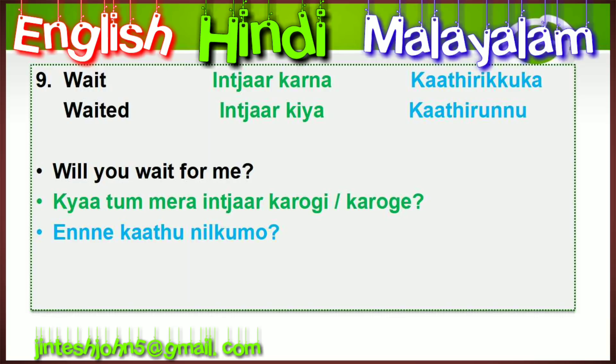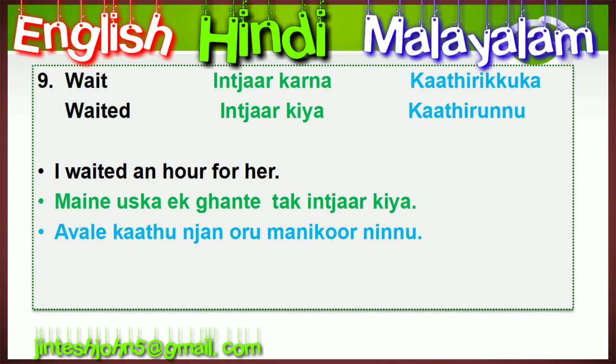The next verb is 'wait.' In Hindi: intazaar karna / khaathirikuga. Second form 'waited': intazaar kiya / khaathirichu. Question: 'Will you wait for me?' In Hindi: kya tum mere liye intazaar karoge? In Malayalam: nee khaathu nilkumo? Example: 'I waited an hour for her.' In Hindi: maine uska ek ghante tak intazaar kiya. In Malayalam: avale khaathu nyan oru manikoor ninnu.